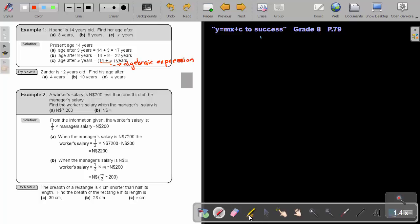Now, due to the fact that I do not know the value of X, I just leave it like this. And we can say that this is an algebraic expression. I want you to do for me try now 1, stop the video, and as soon as you are finished, you can continue with the video. Let's look at try now 1. Xander is 12 years old. Find his age after 4 years. So it will be 12 plus 4, and that will be 16 years.